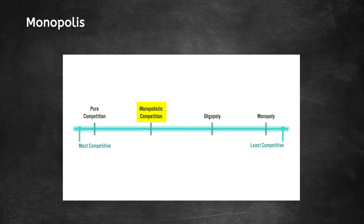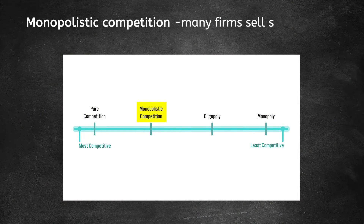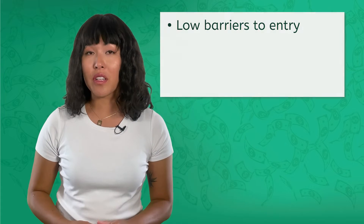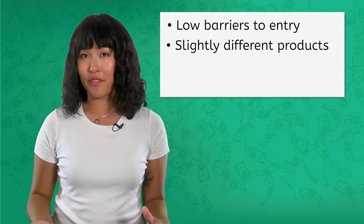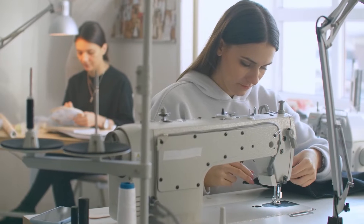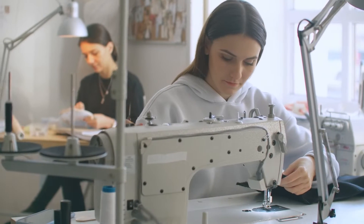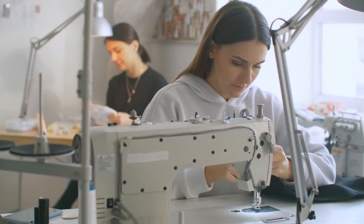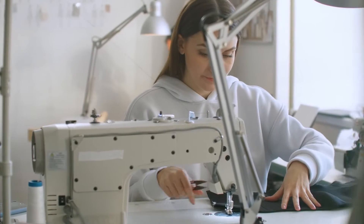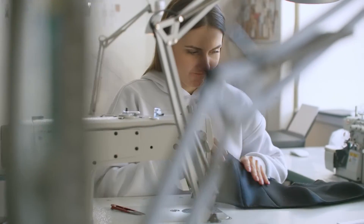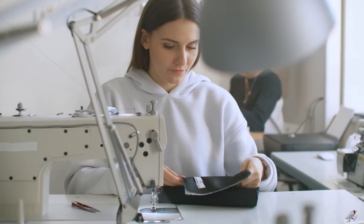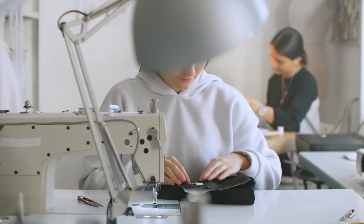In monopolistic competition, many firms sell similar but slightly differentiated products. There are generally low barriers to entry, but because products are slightly different, producers have a degree of control on setting prices. A great example of this is the market for clothing. It's relatively easy to get into the field because firms just need to produce an article of clothing, like a t-shirt. A plain store brand t-shirt has the same function and is made from similar materials as a designer brand t-shirt, but thanks to advertising and the perceived value of different brands, the designer t-shirt can be sold for a lot more money than the store brand.